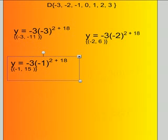Next, you plug in -1. y = -3(-1)² + 18. -1 squared is 1. -3 times 1 is -3. -3 + 18 = 15. You'd write this problem as (-1, 15).